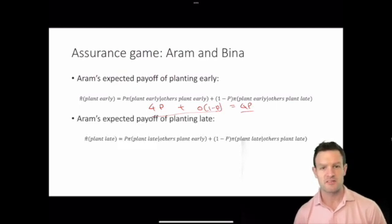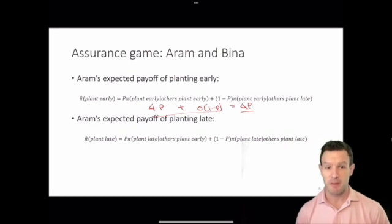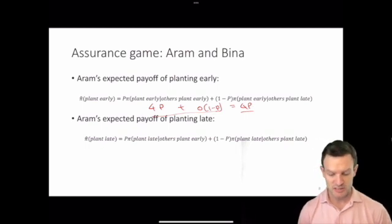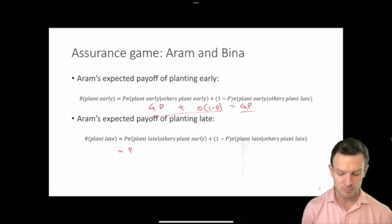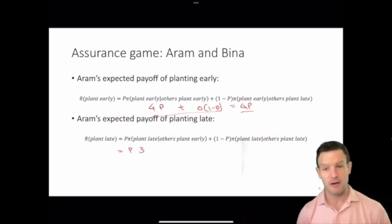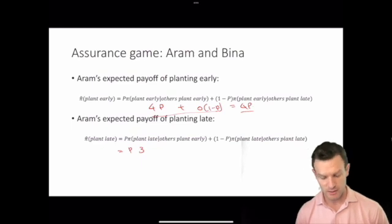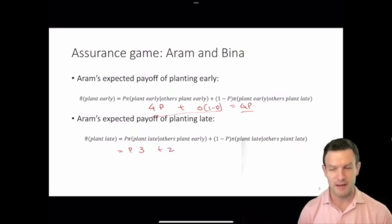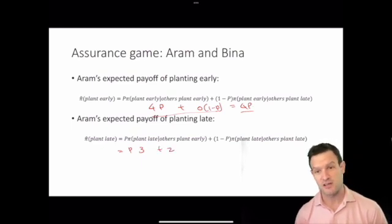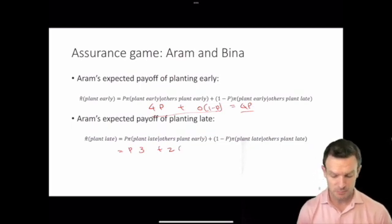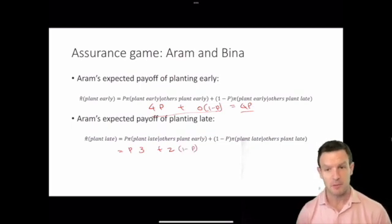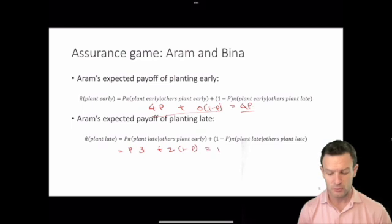We then also thought about his expected payoff of planting late. The expected payoff to playing plant late was equal to P multiplied by 3 — the payoff he received when he planted late and she planted early — plus 2, the payoff when both planted late, multiplied by the probability she played plant late. That all equaled 2 plus P.